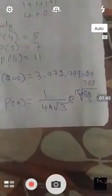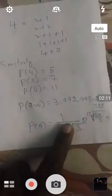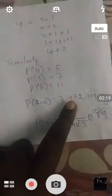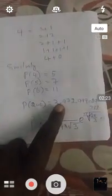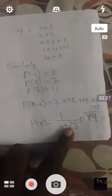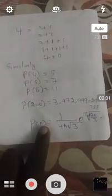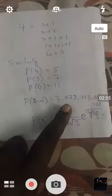There is a general formula for this: p(n) is approximately equal to 1 divided by (4n√3) times e to the power of π√(2n/3). But this formula is not accurate — it has some errors. If you substitute 200 for n, you won't get the exact value, but you will get a number close to it. I will show in a later video that this formula has some error.